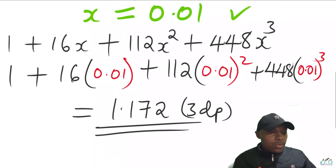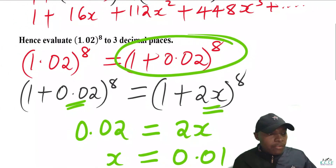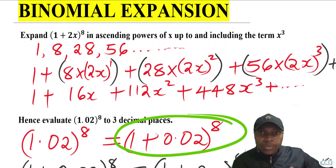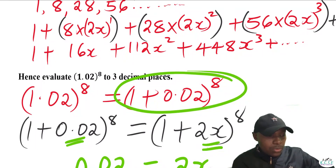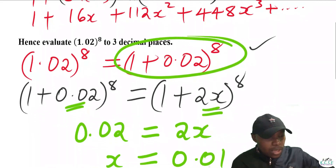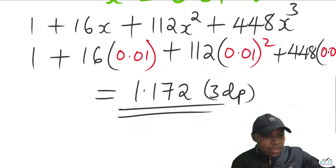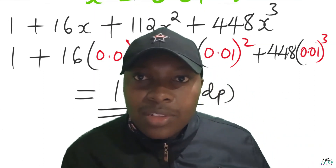That is how you work out this question. By expanding the first part, we start by noting the coefficients from Pascal's triangle, then we expand and simplify. For the second part, you split 1.02 raised to power 8, equate it to the expansion (1 + 2x) raised to power 8, find the value of x, substitute, and get the answer. Thank you so much.